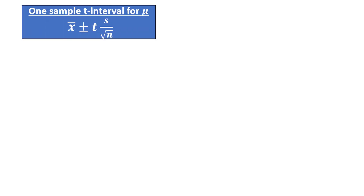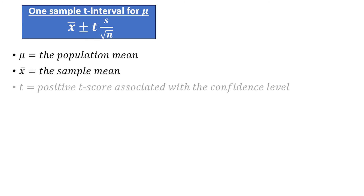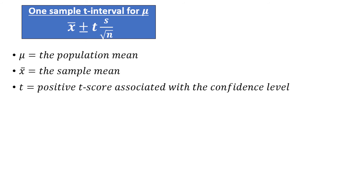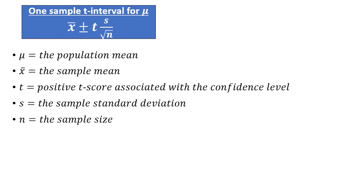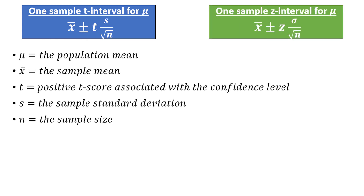Now that we have the assumptions out of the way, let's look at the general formula for a one-sample confidence interval for the mean using the t-distribution. The formula is x-bar ± t × (s / √n), where mu is the population mean, x-bar is the sample mean, t is the positive t-score associated with the desired level of confidence, s is the sample standard deviation, and n is the sample size. The only differences from the z-distribution formula are that we use a t-score instead of a z-score and the sample standard deviation instead of the population standard deviation.